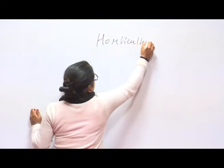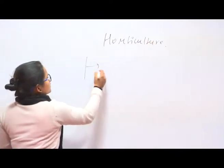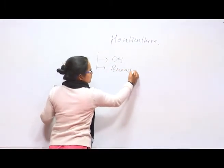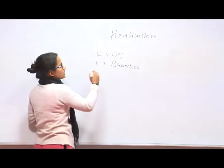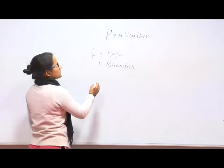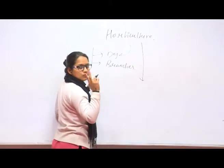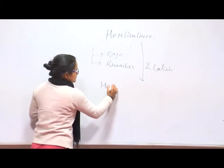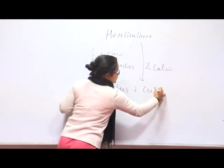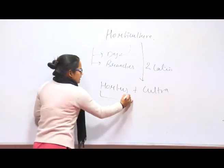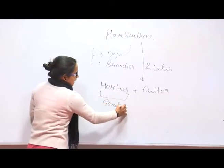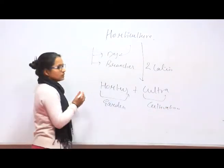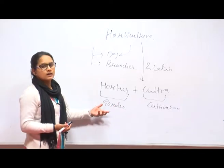In Horticulture, I am going to cover the definition and the branches of Horticulture. What is the definition of Horticulture? Basically, Horticulture is made up of two Latin words: Hortus and Cultura. Hortus means garden and Cultura means cultivation. So the meaning of Horticulture is cultivation of garden, which is known as Horticulture.